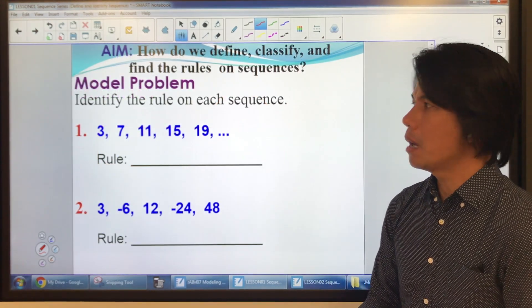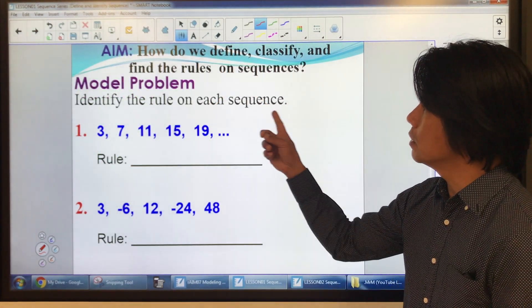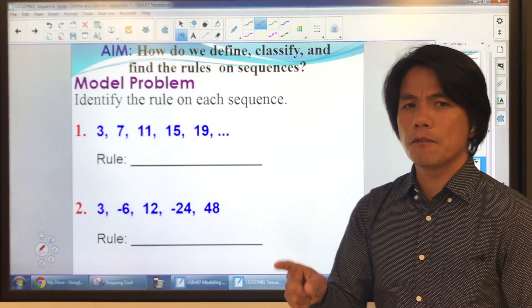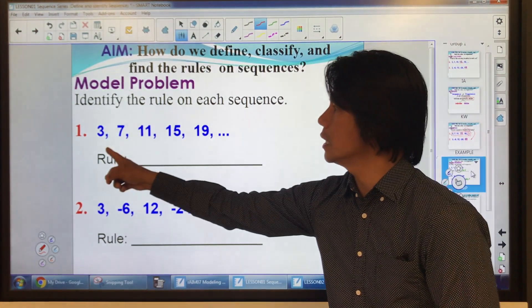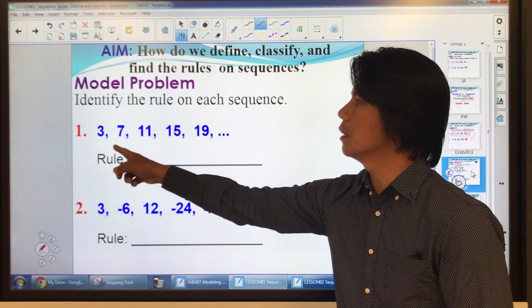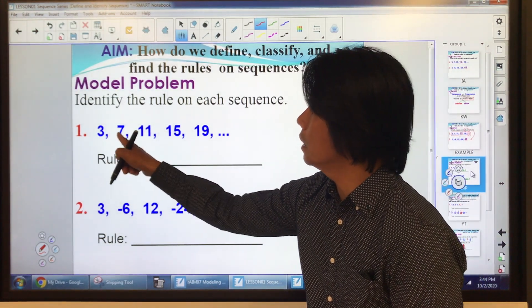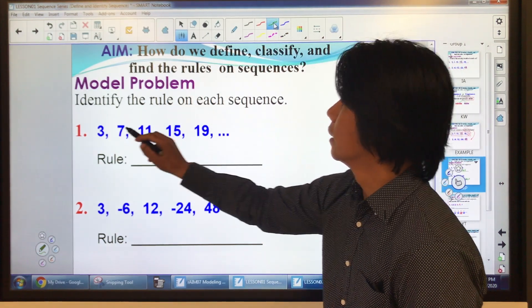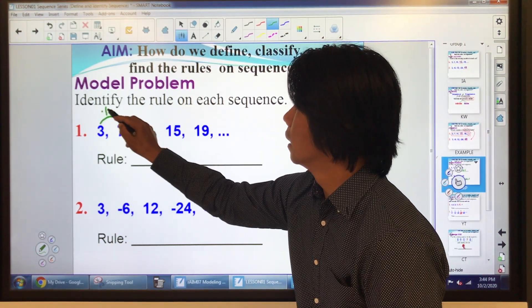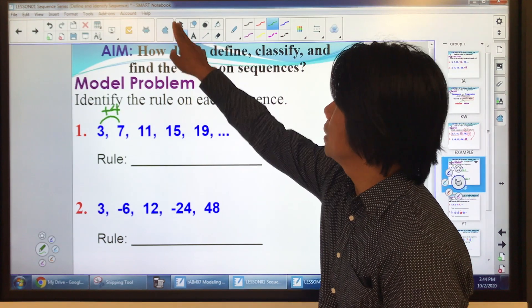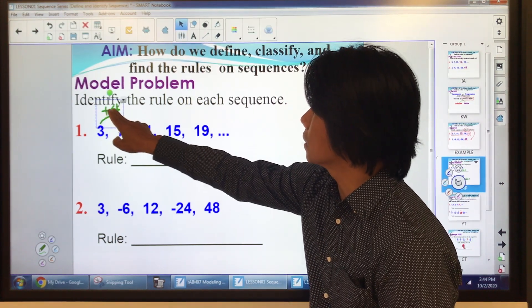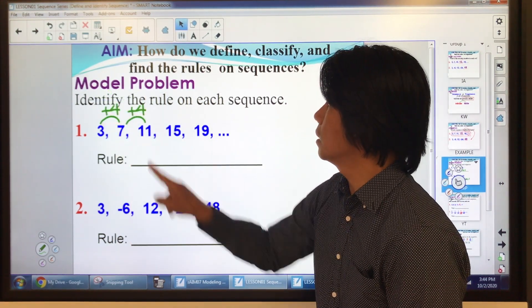Now let's go to the model problem. It says identify the rule on each sequence. Now for us to figure that out, we need to see the pattern, how it goes from one number to another. So what do you do to three to get seven? You just simply add four. But we need to verify if that works.